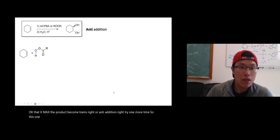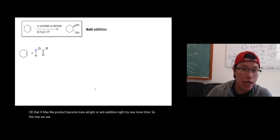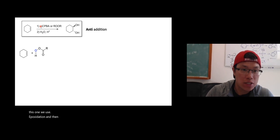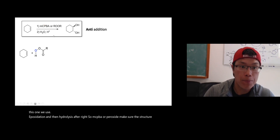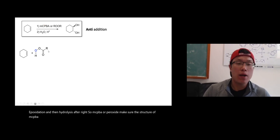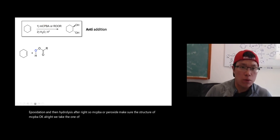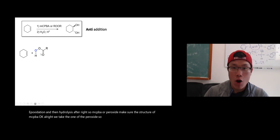So this one, we use epoxidation and then hydrolysis after, right? So MCPBA or peroxide. Make sure you know the structure of MCPBA, okay? Alright. We take the, one of the, peroxide. So, oh, sorry, my bad. Peroxyacid, okay?